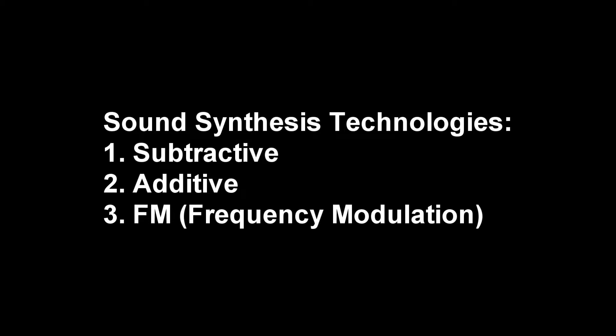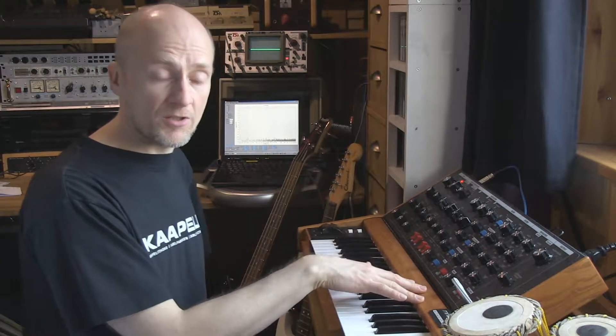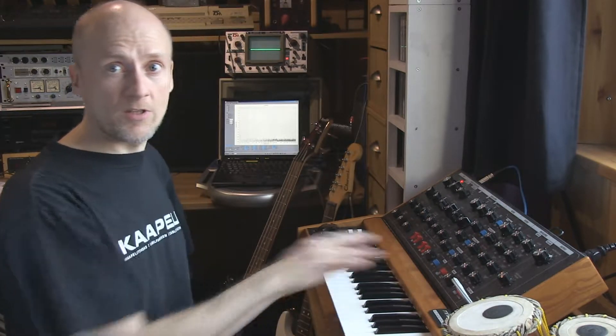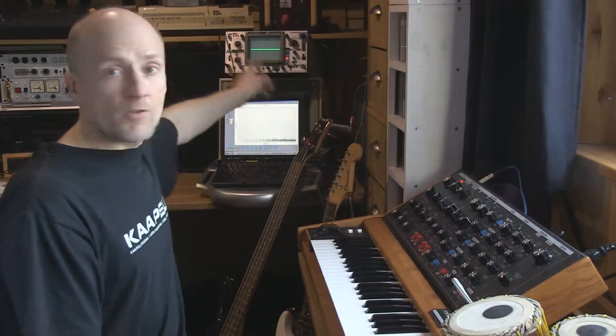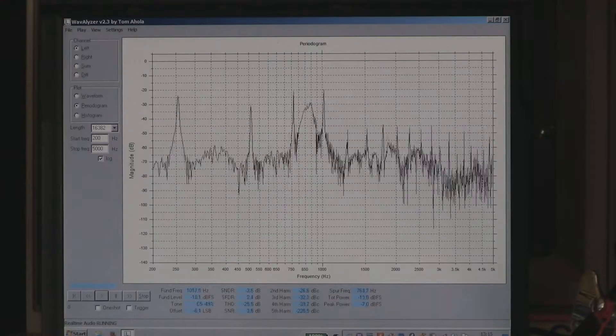Now I'm going to explain a little about the technology of how to synthesize sounds. There are three major technologies: one is subtractive synthesis, another is additive synthesis, and the third one is FM synthesis. I have gathered some tools to help me explain the synthesis methods. I have the Minimoog synthesizer, which is an analog synthesizer and it can do all three major synthesis methods. I have an oscilloscope so we can view the waveform and a spectrum analyzer to check out the spectrum.